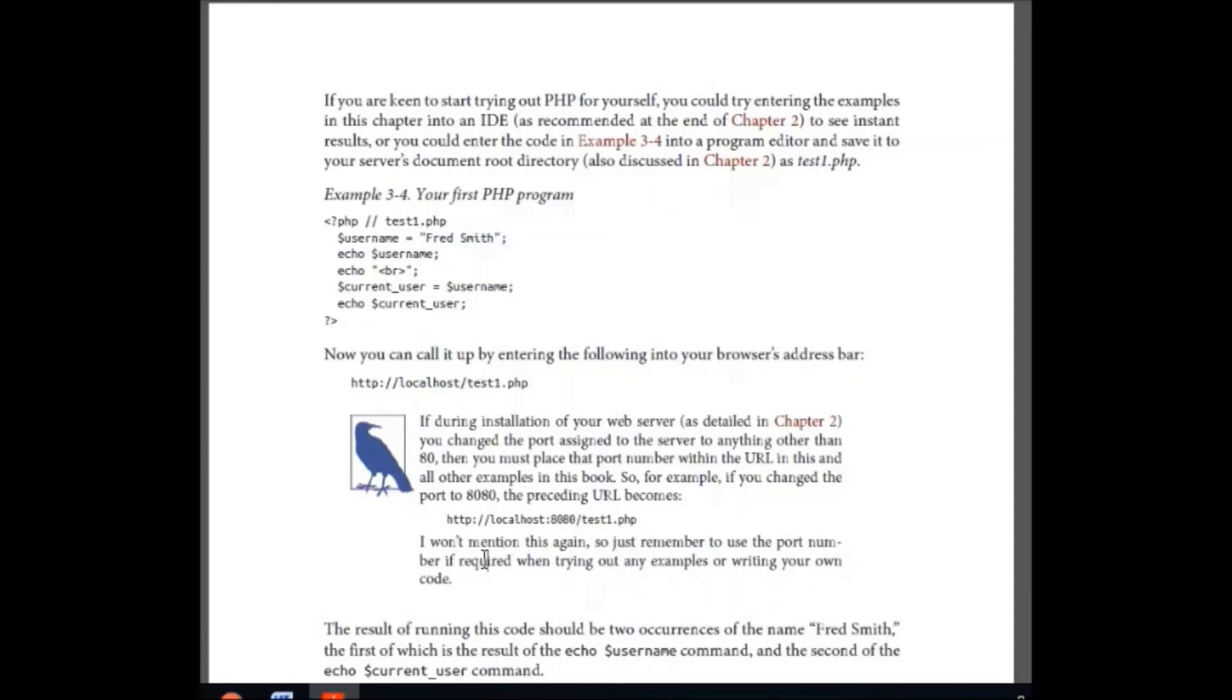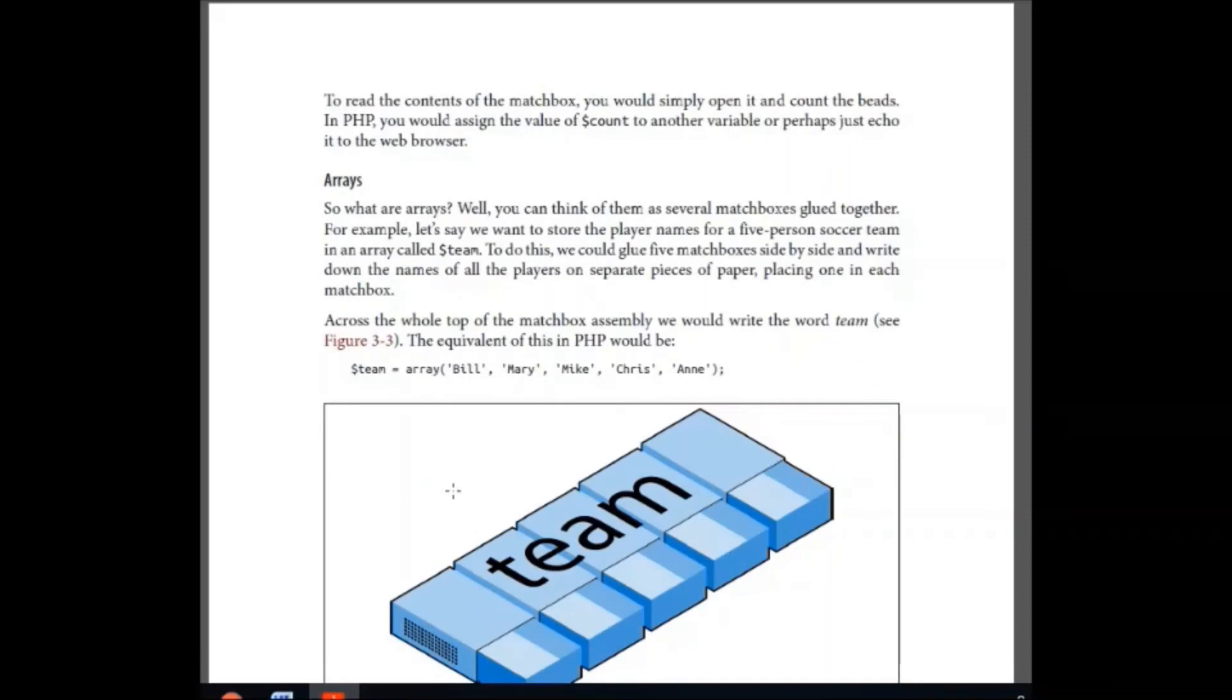These are the numeric variables. If you initialize a variable with a numeric value, it becomes a numeric variable. Again, this is a floating-point number, but definitely it's numeric. And when you, then we have array.